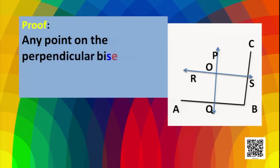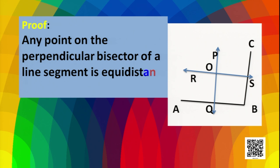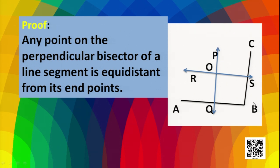Any point on the perpendicular bisector of a line segment is equidistant from its endpoints — this is a statement proved in chapter 7. Since PQ is the perpendicular bisector of AB, any point on this line is equidistant from A and B. Similarly, since RS is the perpendicular bisector of BC, any point on RS is equidistant from B and C.